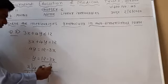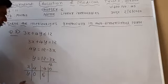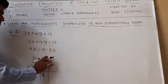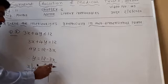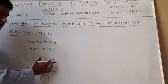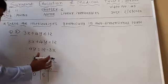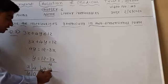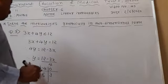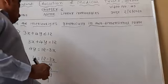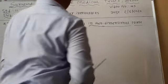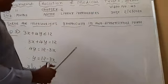Now find one more value. Put x equal to 0: 3 into 0 is 0, so y equals (12 minus 0) divided by 4, which is 12 divided by 4, equals 3. So we get the ordered pair (0, 3). Our three ordered pairs are: (4, 0), (minus 4, 6), and (0, 3). To draw the line, at least two points are required.